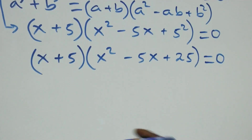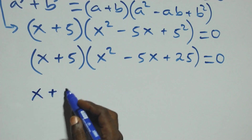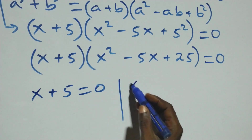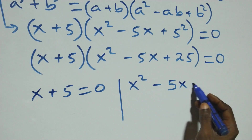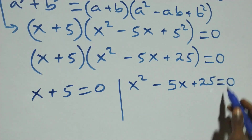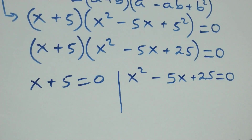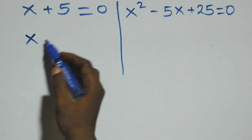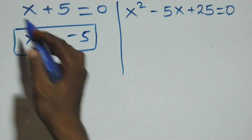Then we have two possible cases: x plus 5 equals zero, or x squared minus 5x plus 25 equals zero. From the first factor, this becomes x equals negative 5, which is a real solution.